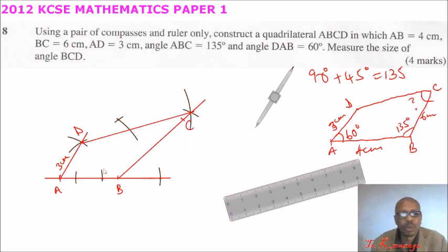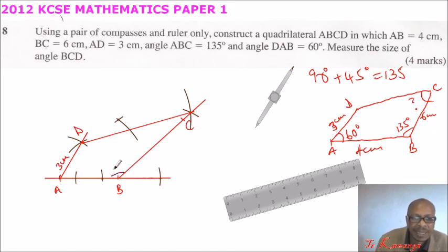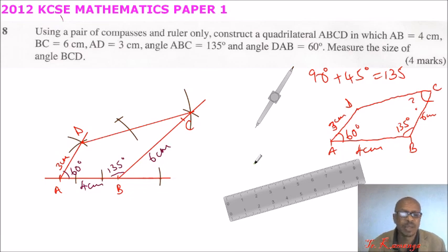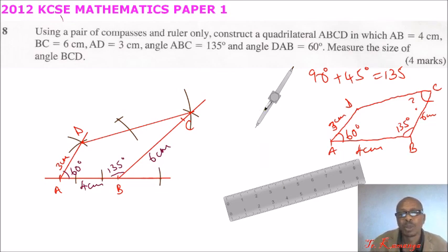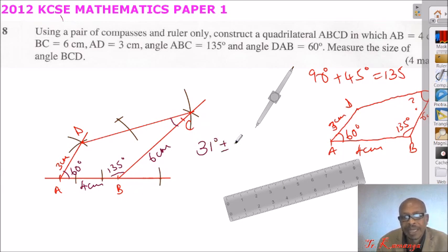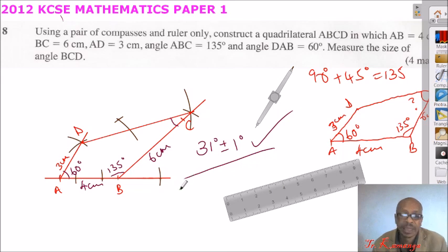The figure looks similar to our sketch. This angle here is 135 degrees, this angle is 60 degrees, this side is 6 cm, and this is 4 cm. That is how you construct the quadrilateral. Doing it manually, you should be able to move faster as long as you know how to construct the angle of 60 degrees and 135 degrees. You are then supposed to measure angle BCD using your protractor. The angle will be 141 degrees, plus or minus 1 degree. That is how you do this question.